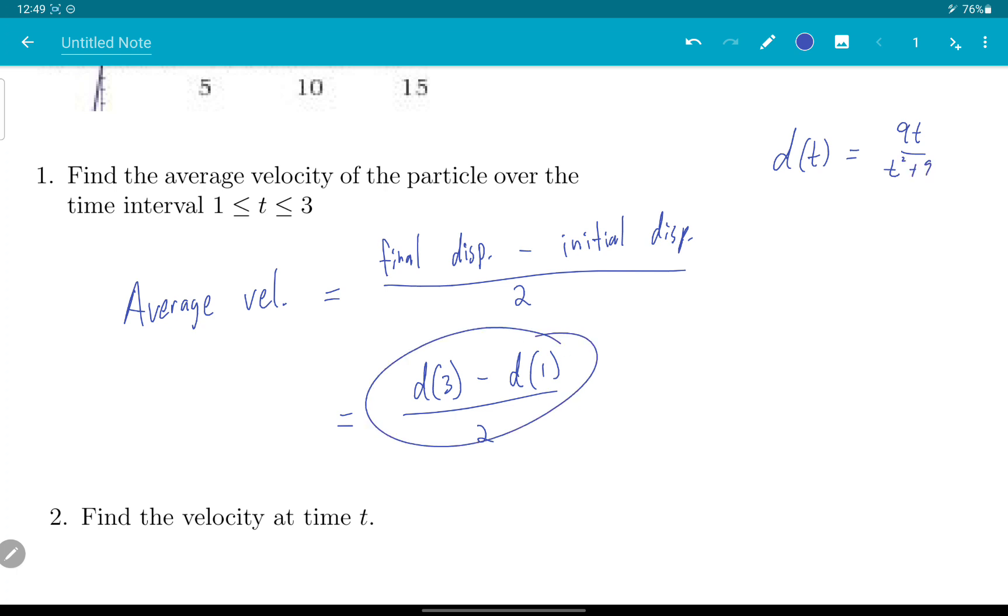So we can quickly evaluate these things. We get 27 over 18, minus 9 over 10, all divided by 2. That is 3 over 2, minus 9 over 10, all divided by 2.